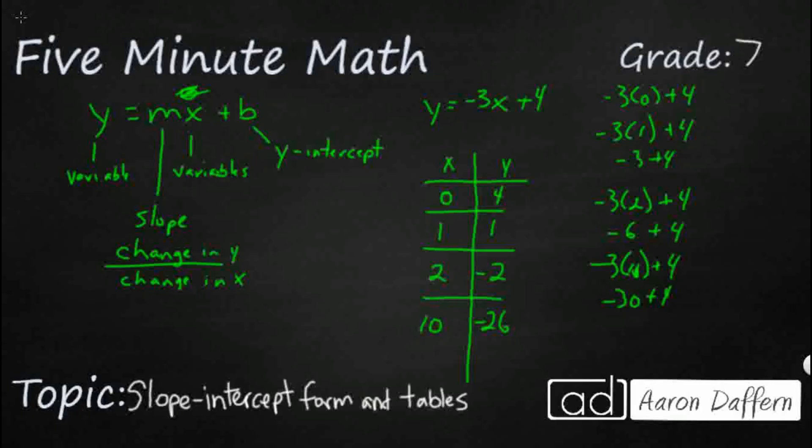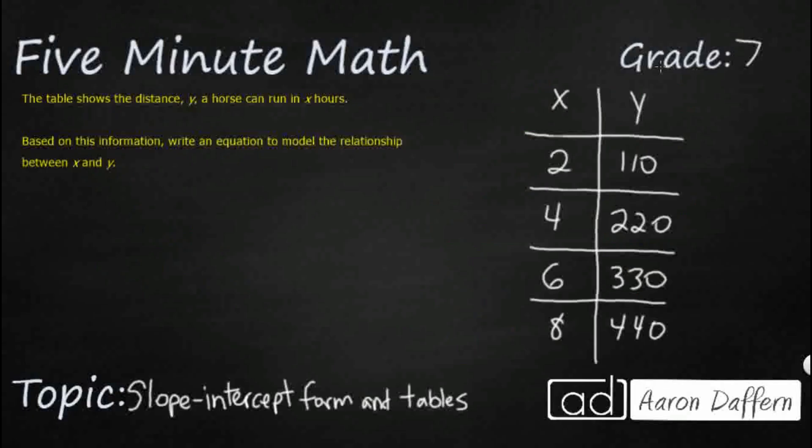And if we wanted to, now we've got x, y coordinates, we could plot this on a graph. So we have information here about a horse and how far a horse can run in x hours. And so we're supposed to write an equation to model this relationship. So let's take a look at our y equals mx plus b. And they're going to actually give us our x and y.